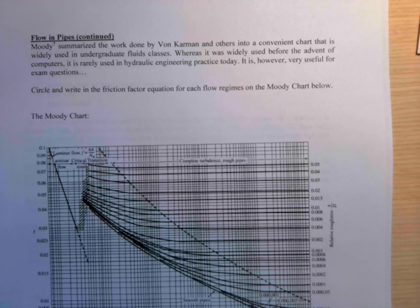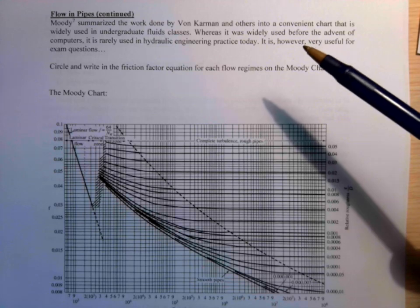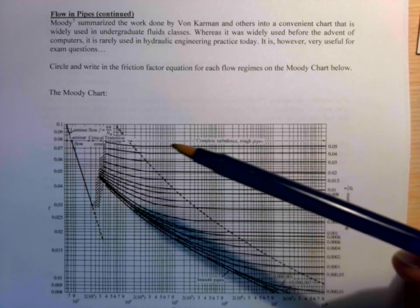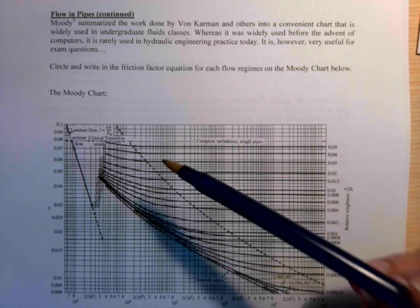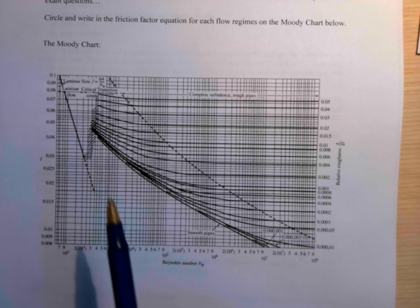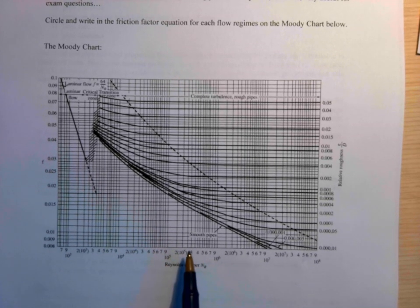I thought I would start by summarizing where we were at with the Moody chart. Remember that we talked about how there's different kinds of flow scenarios. We have laminar flow and turbulent flow. In the Moody chart, we have the Reynolds number on the x-axis. Low Reynolds number is laminar flow, high Reynolds number is turbulent.